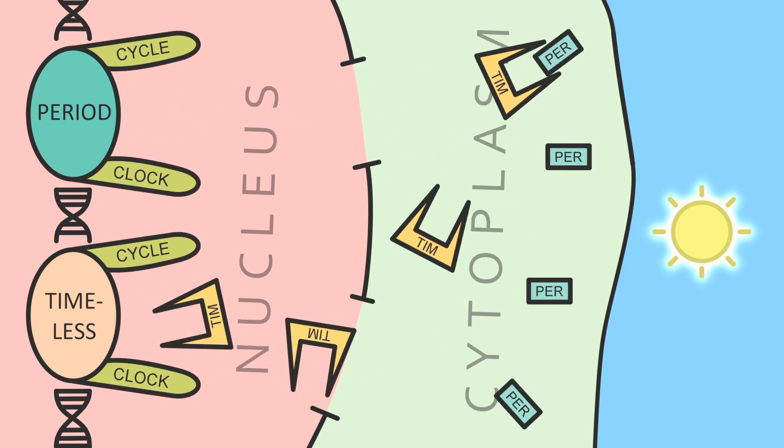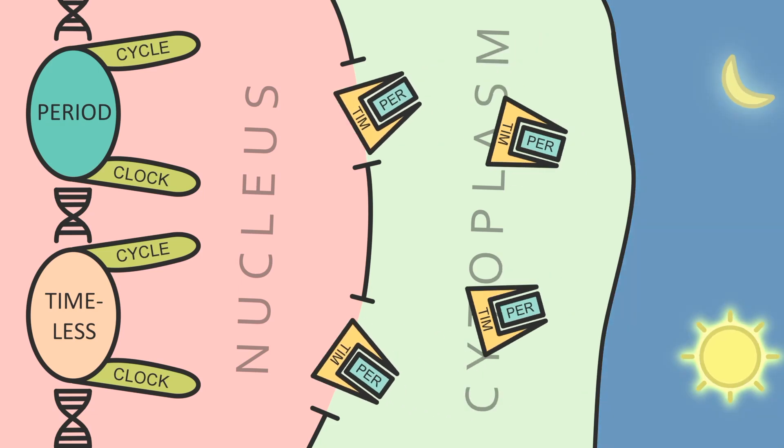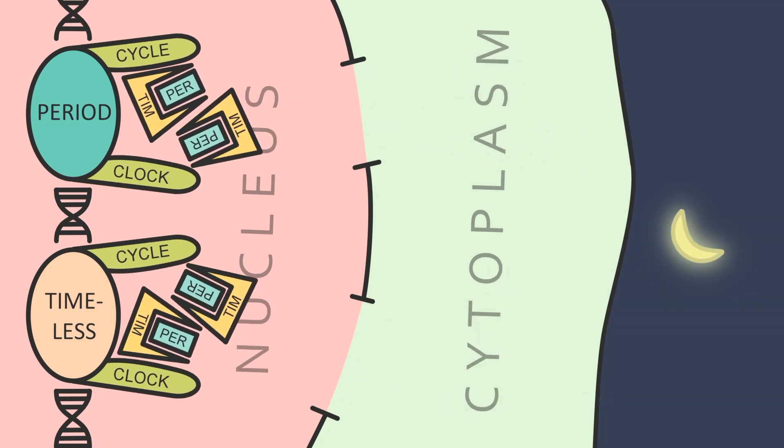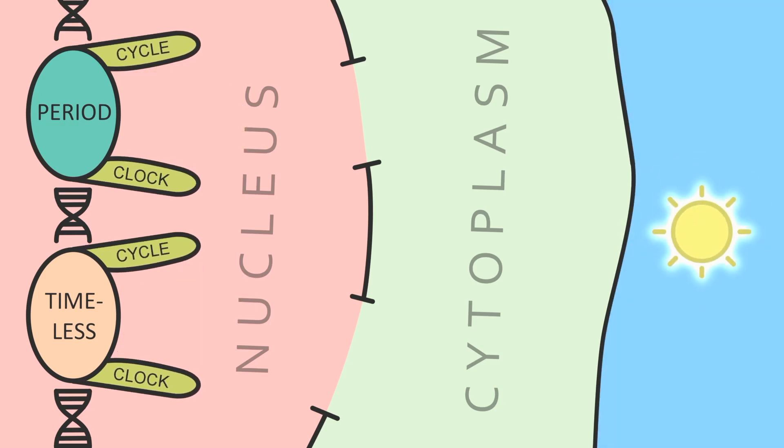In cytoplasm, TIM bonds to PER, which prevents PER from breaking down so easily. It's actually this combination that prevents cycle and clock genes from working. In the morning, these proteins break down to restart the cycle.